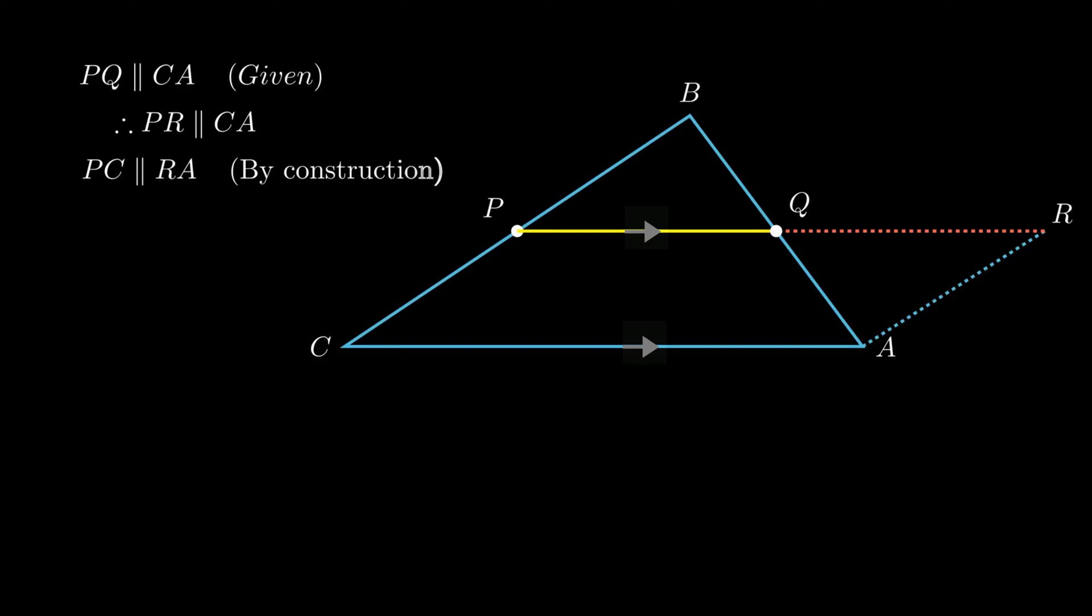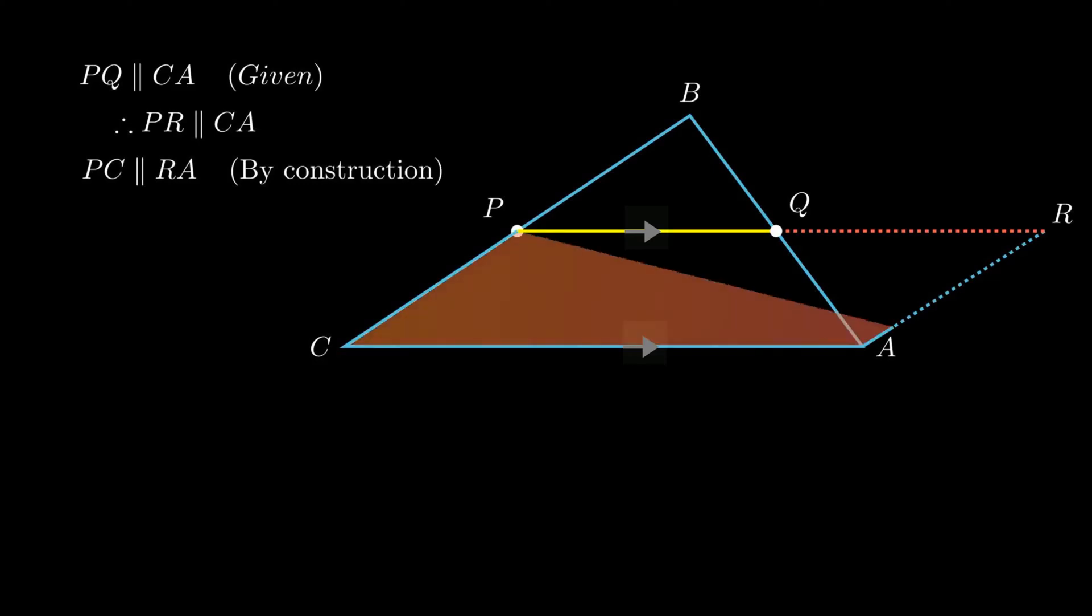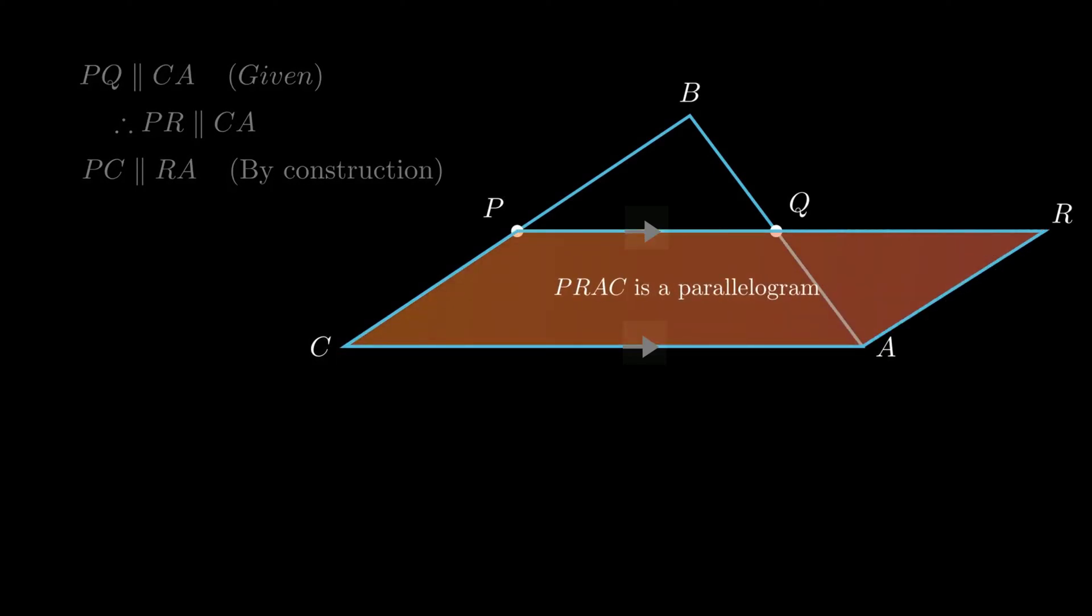Since opposite sides of quadrilateral PRAC are parallel, therefore quadrilateral PRAC is a parallelogram. By geometrical property of a parallelogram, opposite sides are equal, so side PC is equal to side RA. Since segment PB is equal to segment PC as P is the midpoint, we conclude segment PB is equal to segment RA.